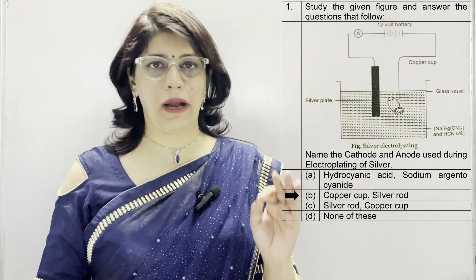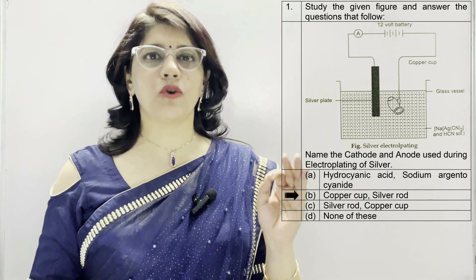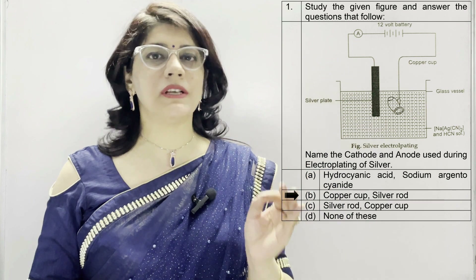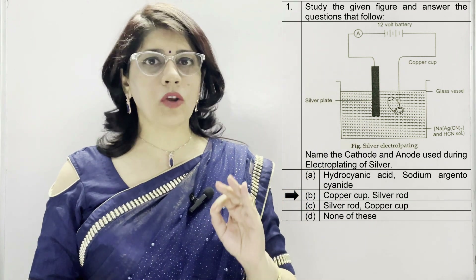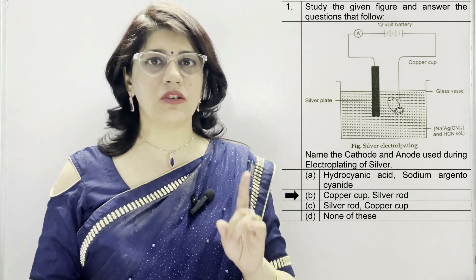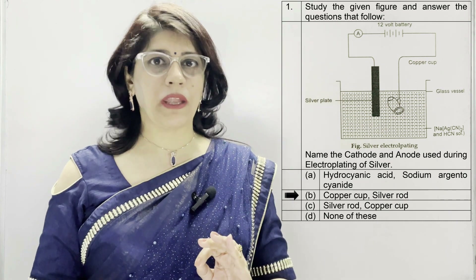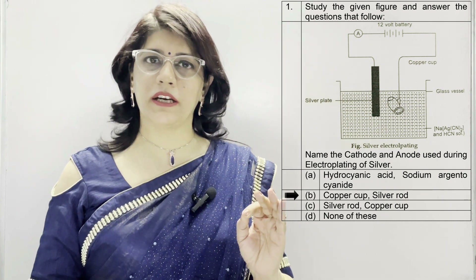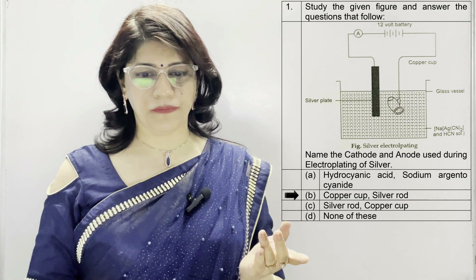Always keep in mind that the article to be electroplated is always kept at the cathode, and the cathode is connected with the negative terminal of the battery, while the anode is connected with the positive terminal of the battery.